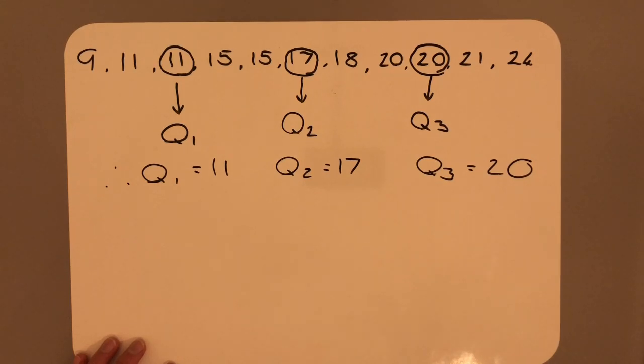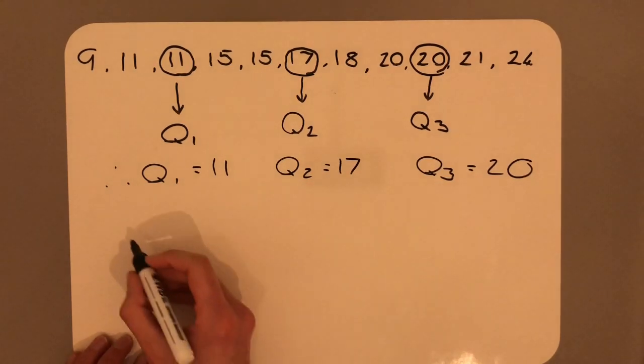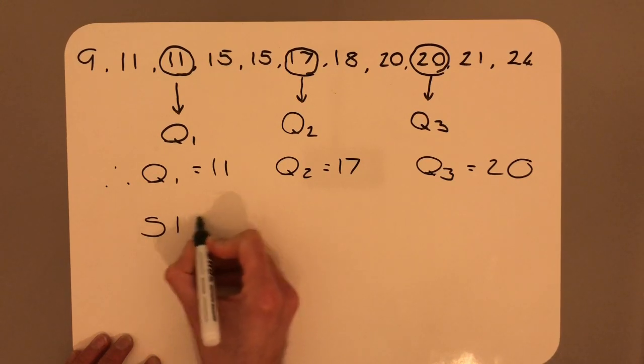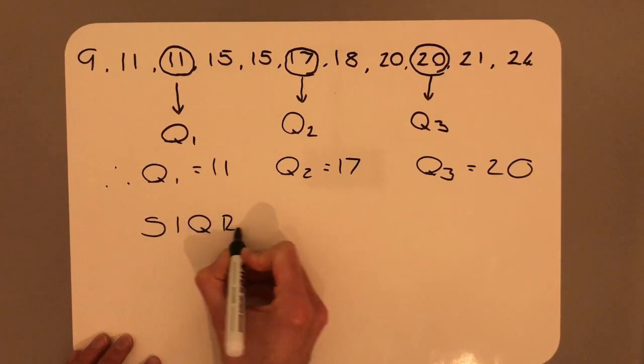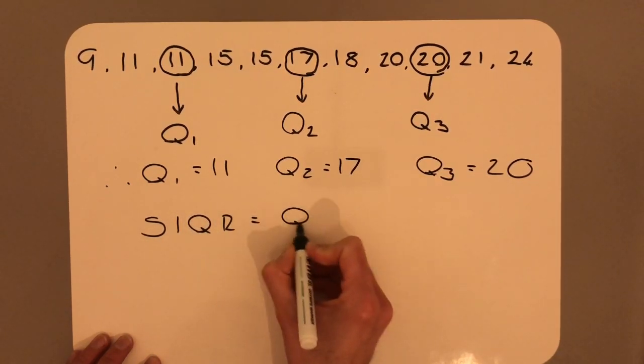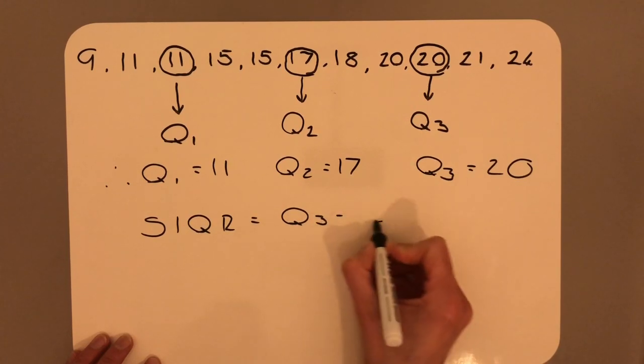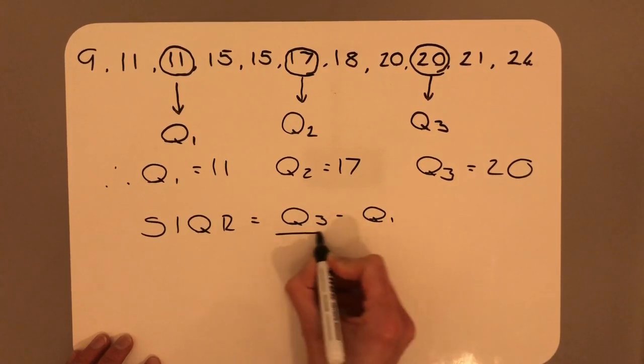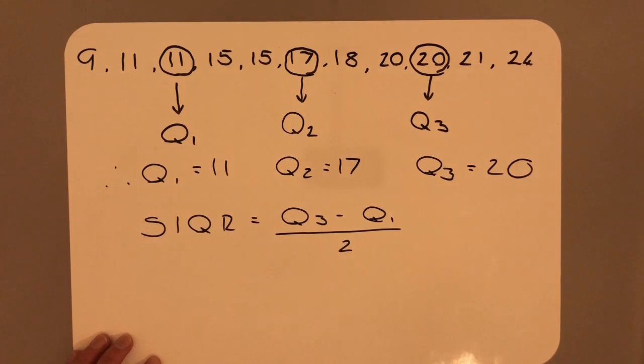In part B, we were asked for the semi-interquartile range. SIQR is equal to Q3 subtract Q1, all divided by 2. Now this is a formula that we must learn.